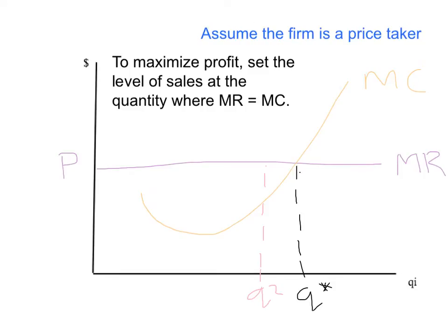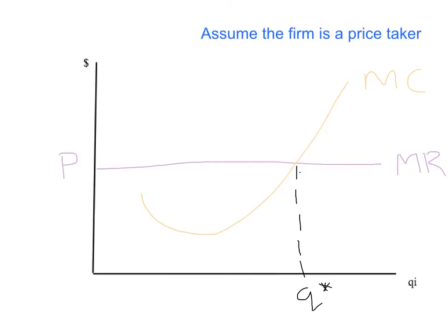Just at Q star, that's the only level of production where marginal revenue and marginal cost are the same. You don't want to increase production because profits will go down. You don't want to decrease production because profits will go down. This is the best it gets in terms of profit maximization. So Q star, where marginal revenue equals marginal cost, maximizes the firm's profit.